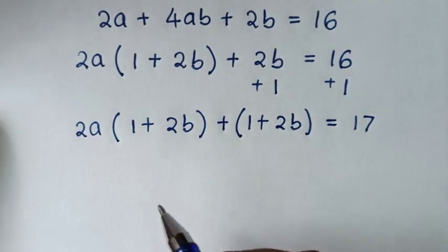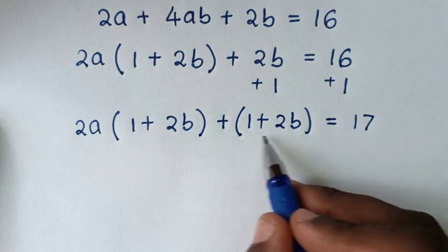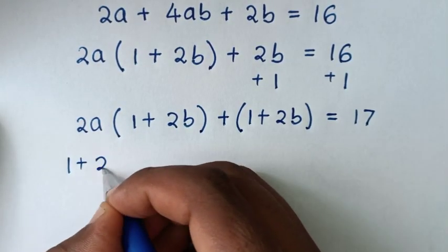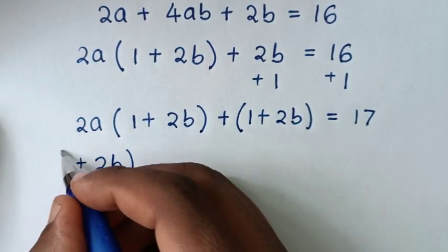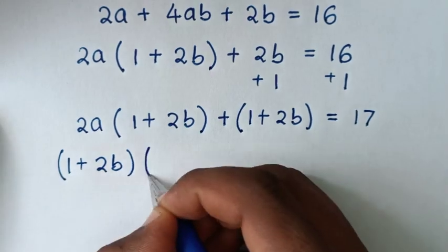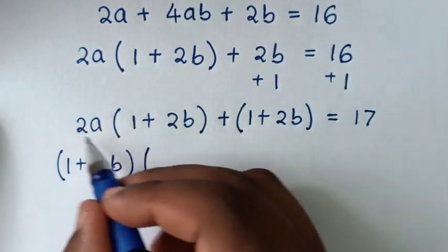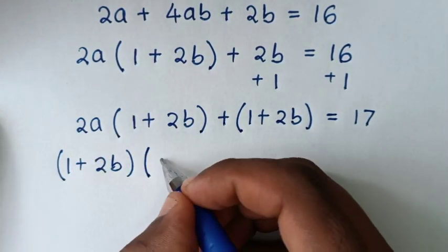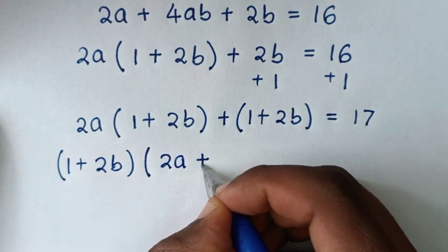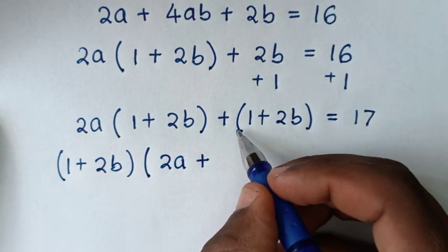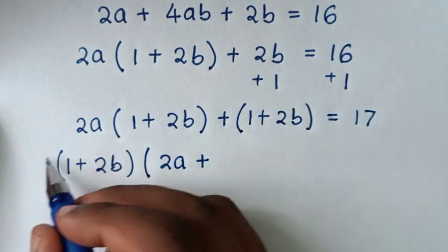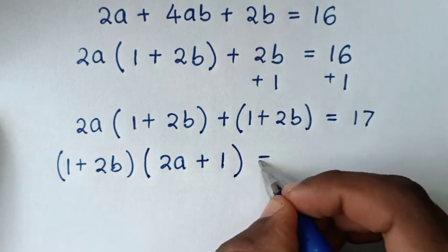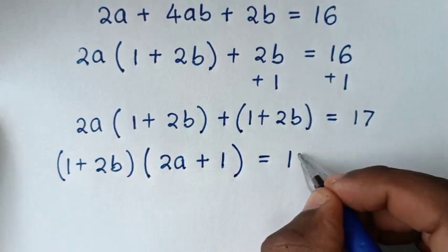In the next step, 1 plus 2b is common, so we factor it out: 1 plus 2b bracket, times 2a plus 1 bracket, is equal to 17.